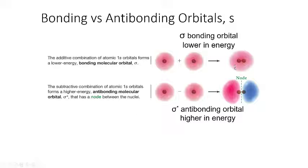The constructive case gives us what we call a sigma bonding orbital. The destructive case gives us sigma-star, which is an anti-bonding orbital, higher in energy than the sigma bonding orbital. These are electrons that cannot bond because there is a node of zero probability of finding an electron in the space between the two separate atoms.